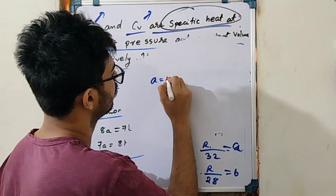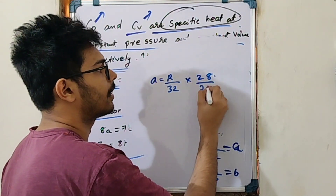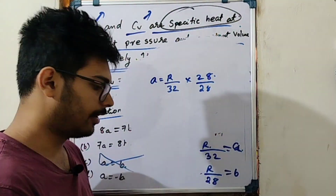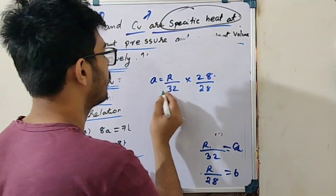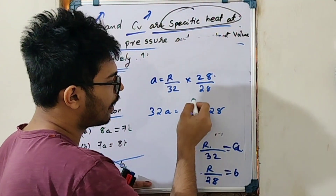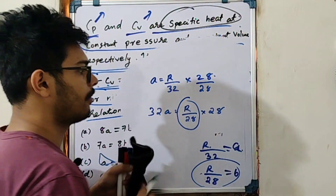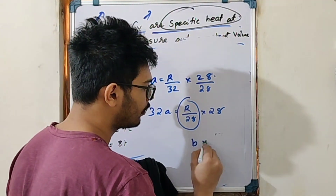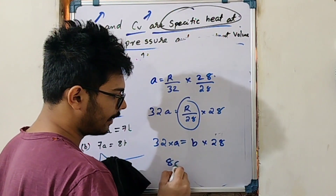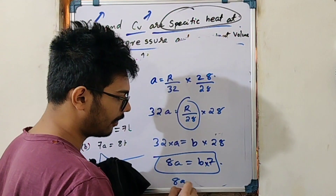So A equals R divided by 32, and B equals R divided by 28. Substituting: B divided by A equals 32 divided by 28 equals 8 divided by 7. Therefore A equals 7B divided by 8, or equivalently 28A equals 32B, giving the ratio A to B as 7 to 8.